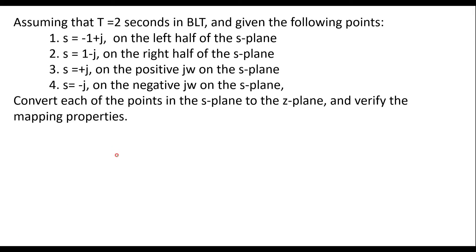In this video, we will consider one example on bilinear transformation. Assuming that T equal to 2 seconds in bilinear transformation and given the following points: s equal to minus 1 plus j on the left half of the s-plane, s equal to 1 minus j on the right half of s-plane, s equal to plus j on the positive j omega on the s-plane, and s equal to minus j on the negative j omega on the s-plane. Convert each of the points in the s-plane to the z-plane and verify the mapping properties.